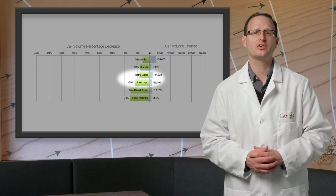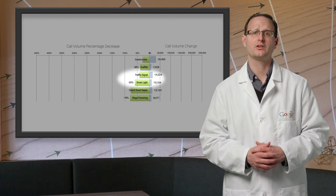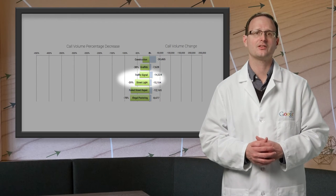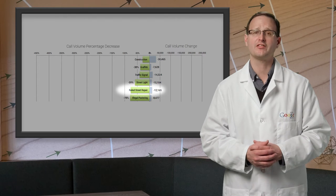Broken streetlights and faulty traffic signals are both down around 50%, possibly related to the gradual introduction of LEDs, and street repairs seem to be failing far less often.